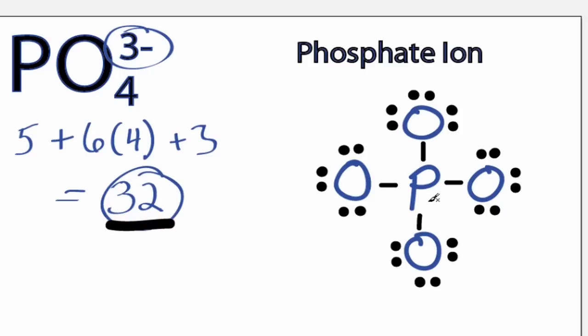But Phosphorus is in period 3, it can hold more than 8 valence electrons, so let's check our formal charges to see if this is the best structure.